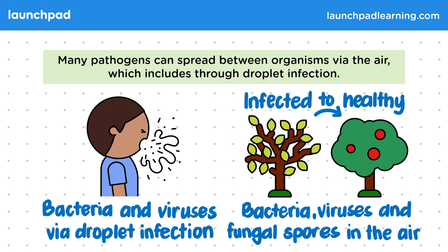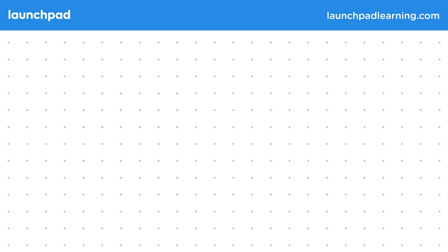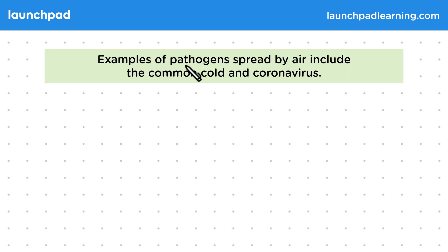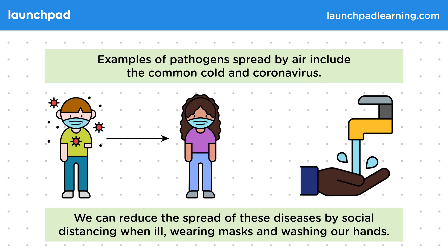So how can we reduce or even prevent the spread of diseases in this fashion? Examples of pathogens spread by air include the common cold and coronavirus. We can reduce the spread of these diseases by social distancing when ill, wearing masks, and washing our hands.